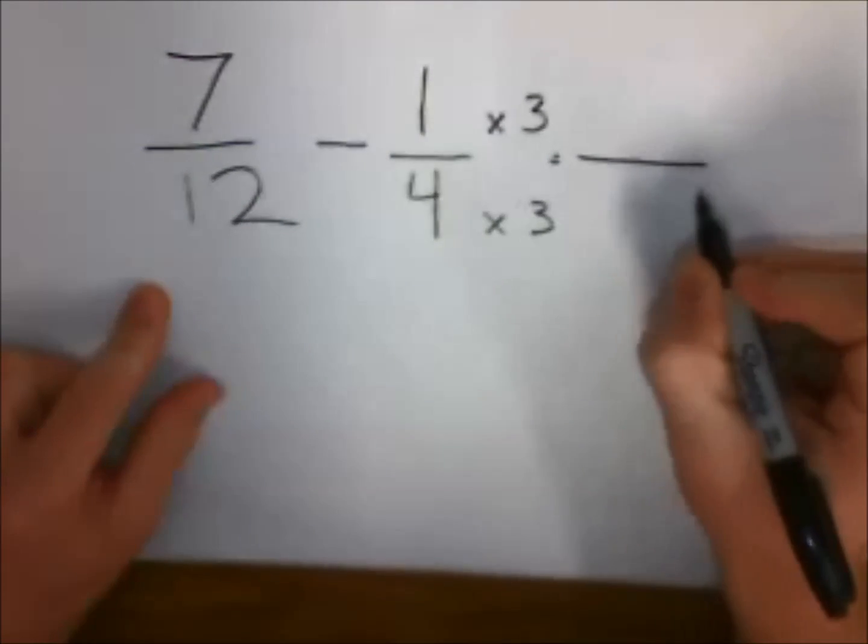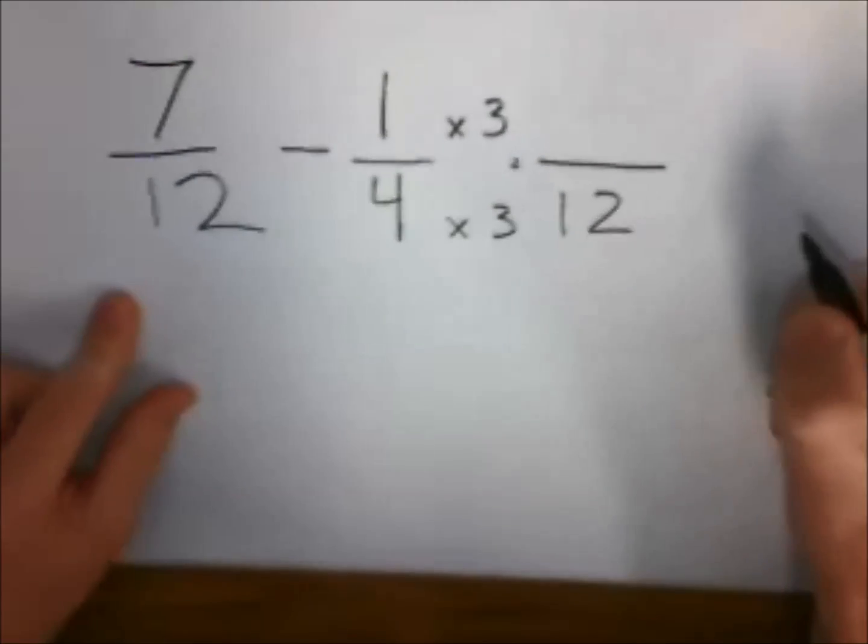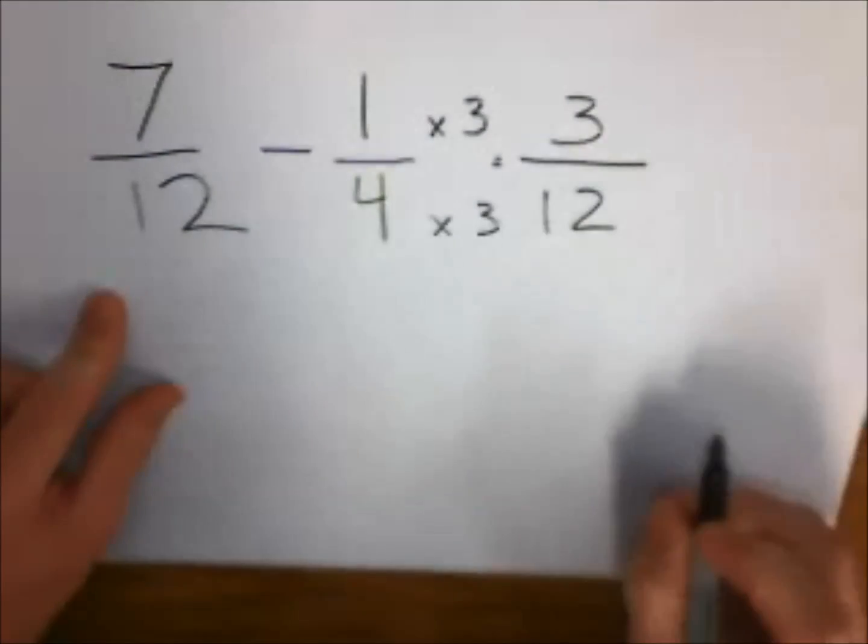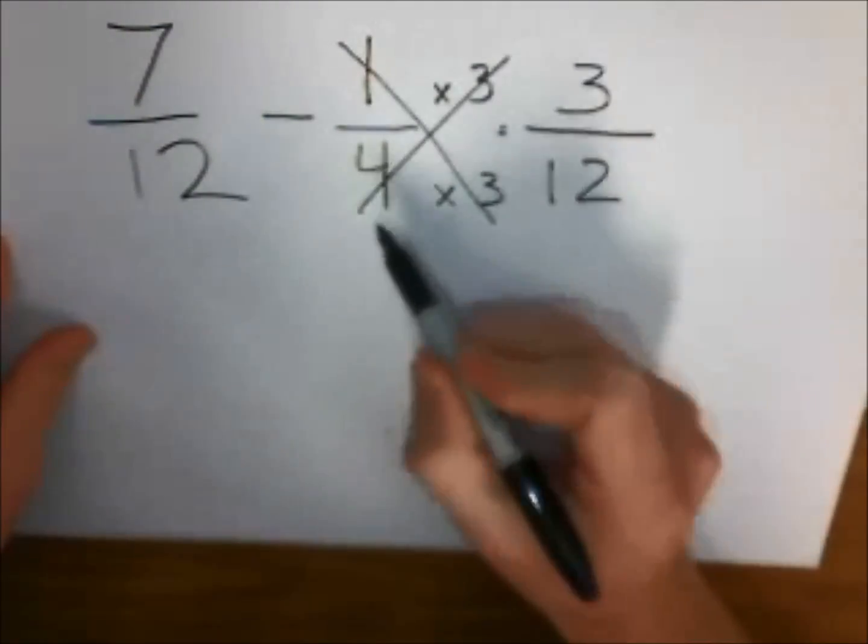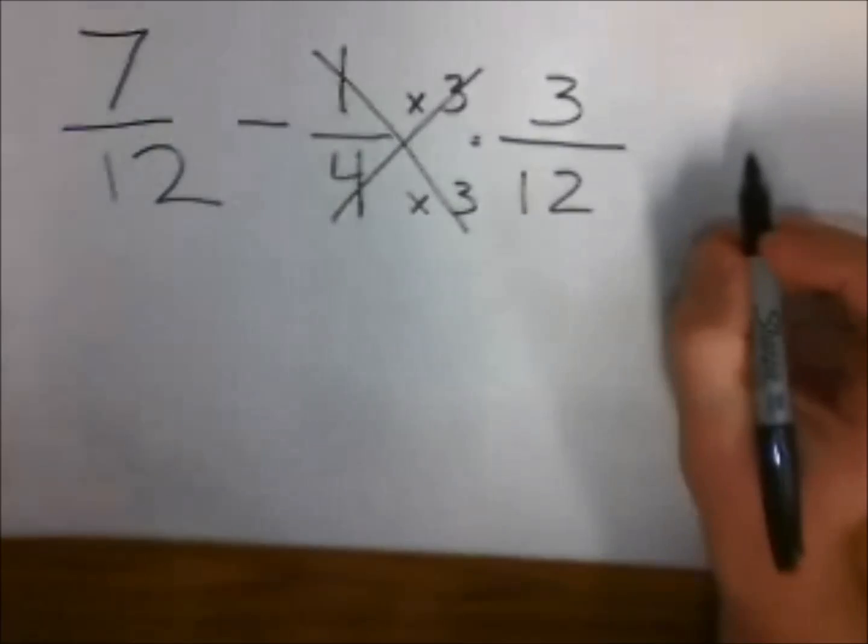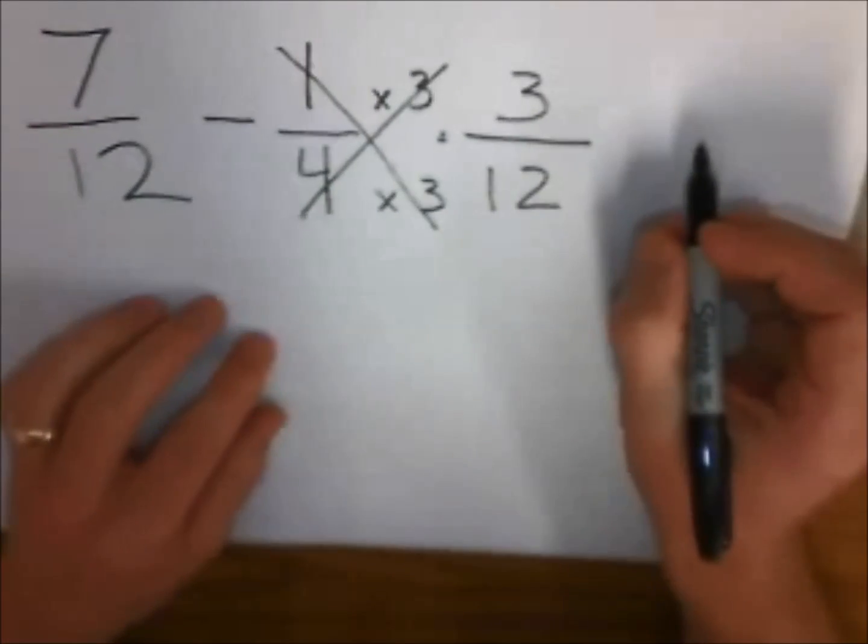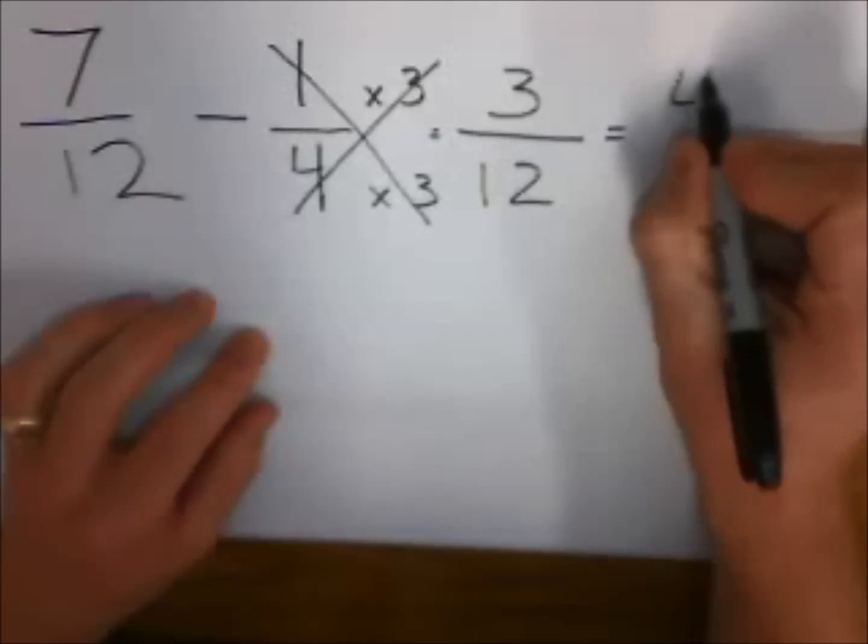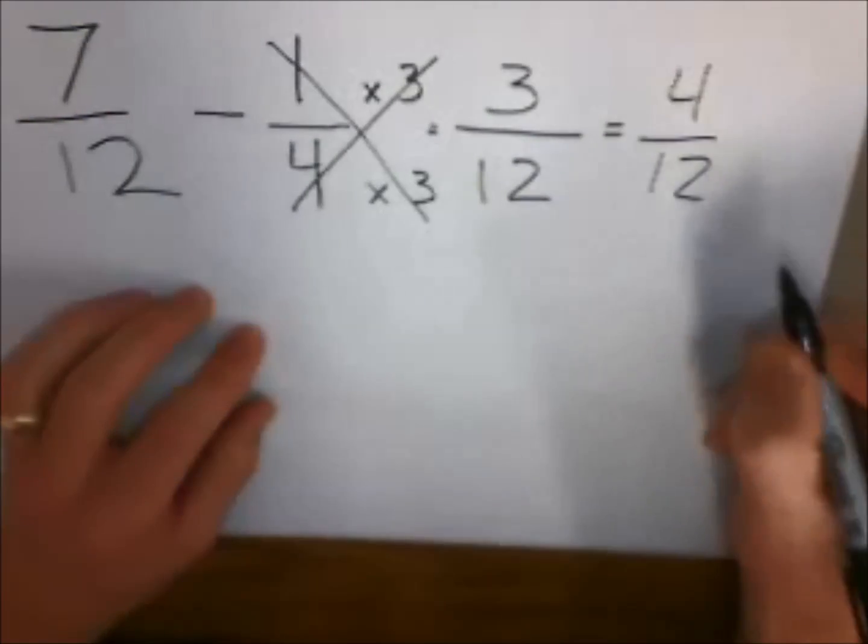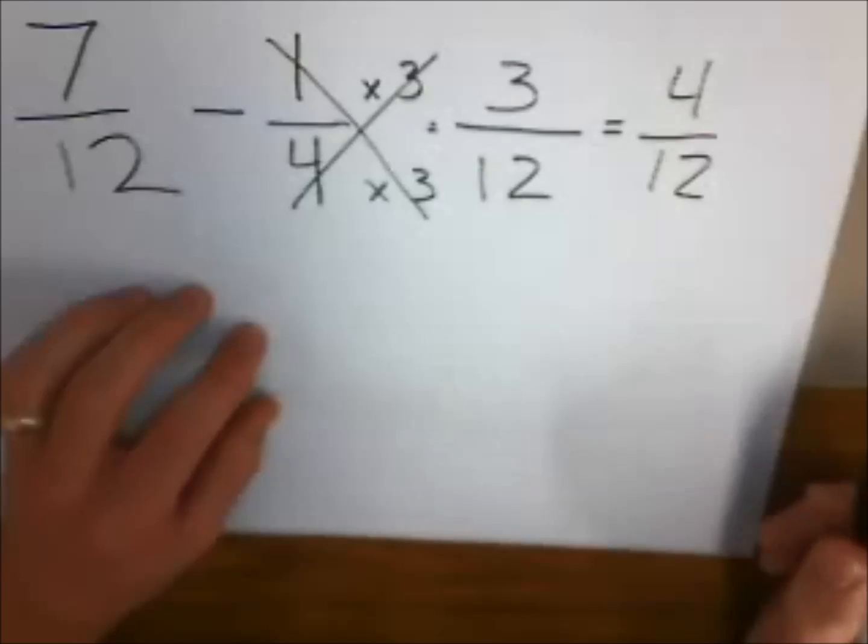We make an equivalent fraction of 3/12. Since we're not going to use this one and they're the same, we're just going to fruit ninja that, take that out. Now what we have is 7/12 take away 3/12 equals 4/12. Yay, we solved the problem!